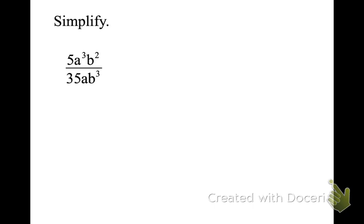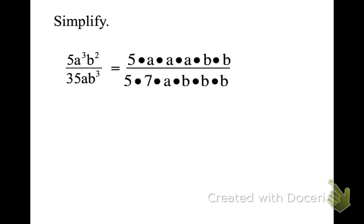Now let's look at 5A³B² over 35AB³ — this is a review of Chapter 5. We can expand it to 5 times A times A times A times B times B, but that takes a lot of time. Instead, break it into prime factors. The common factor of 5 cancels, there's a common factor of A, and common factors of B. What's left in the numerator is A squared.